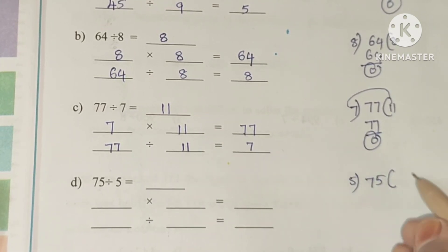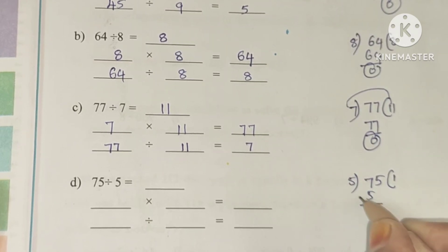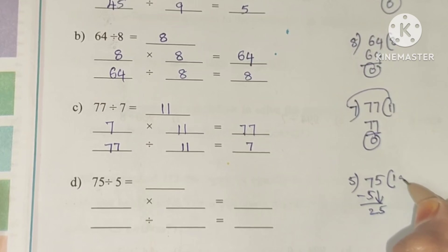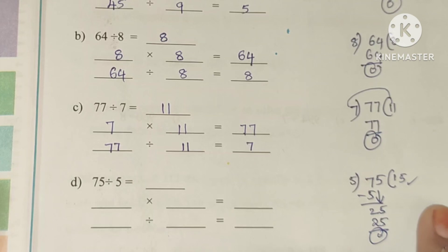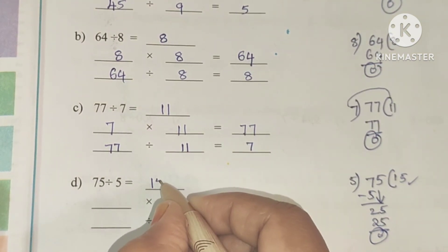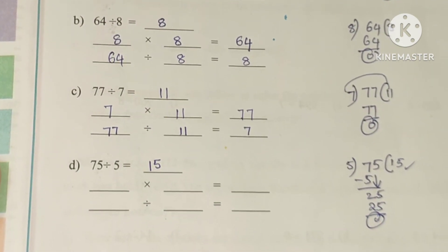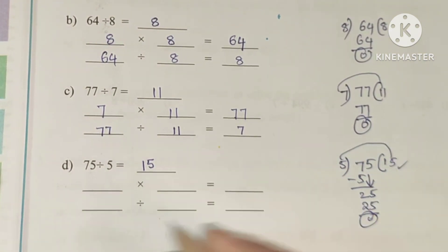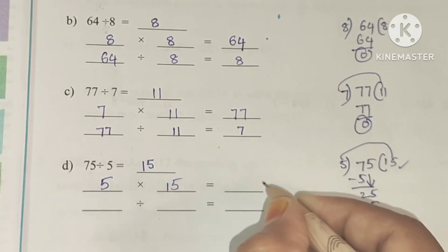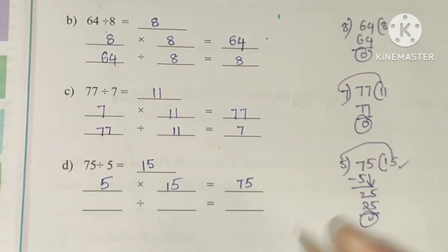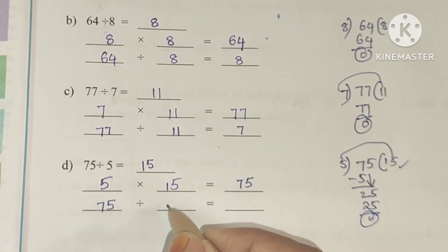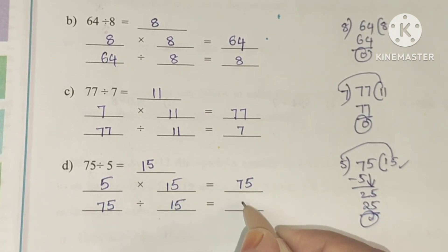D: 75 divided by 5. Dividing: 5 ones are 5, 7 minus 5 is 2, and 5 fives are 25, so the quotient will be 15. So 75 divided by 5 equals 15. Multiplication fact: 5 into 15 equals 75. Interchanging: 75 divided by 15 equals 5.